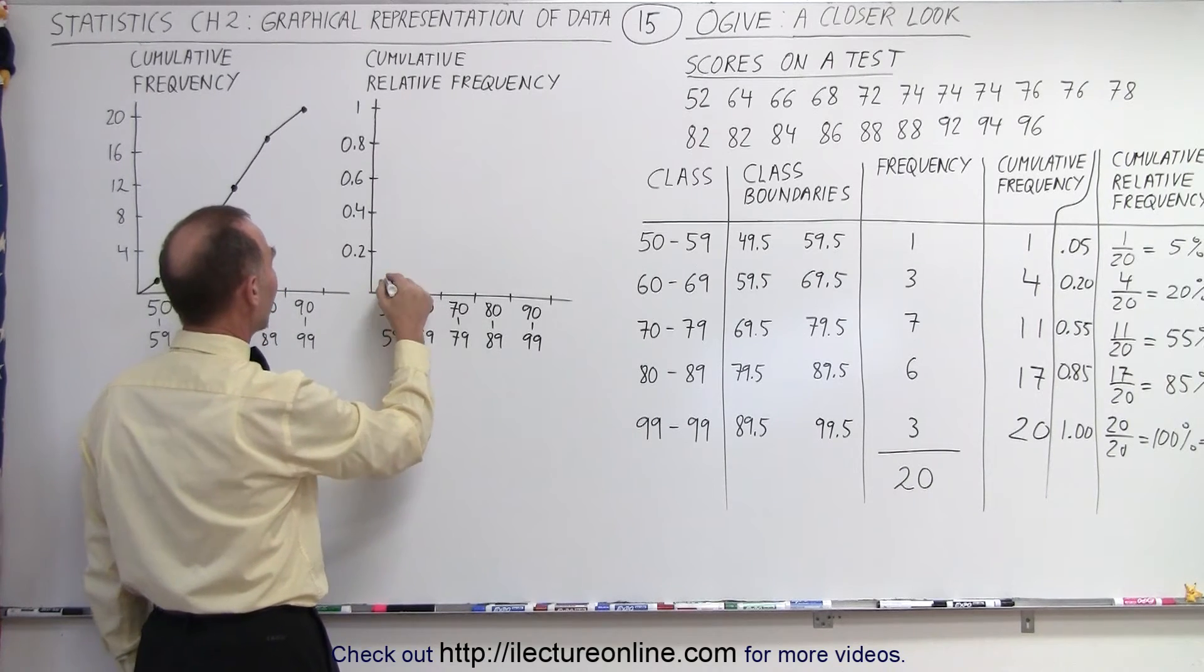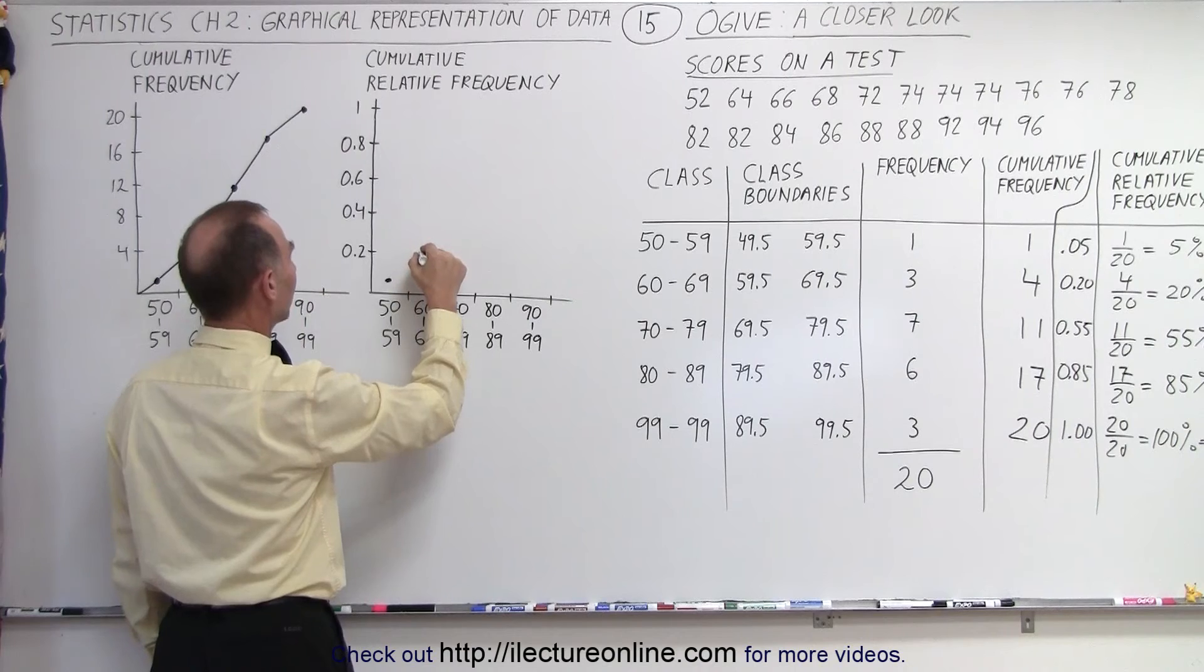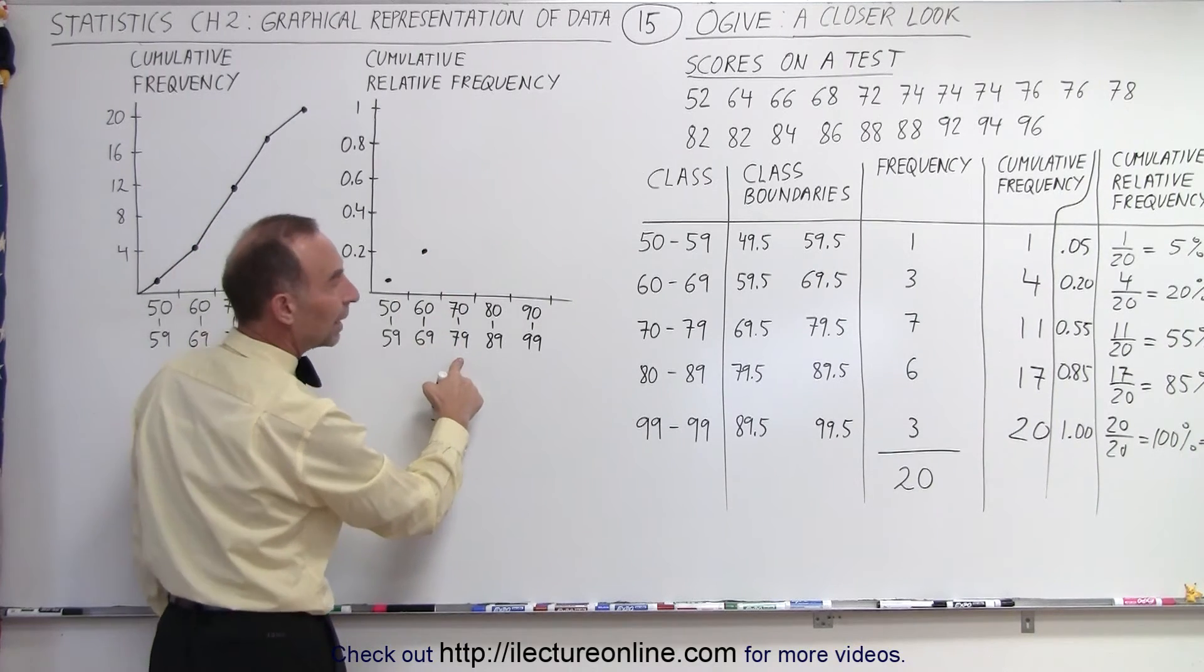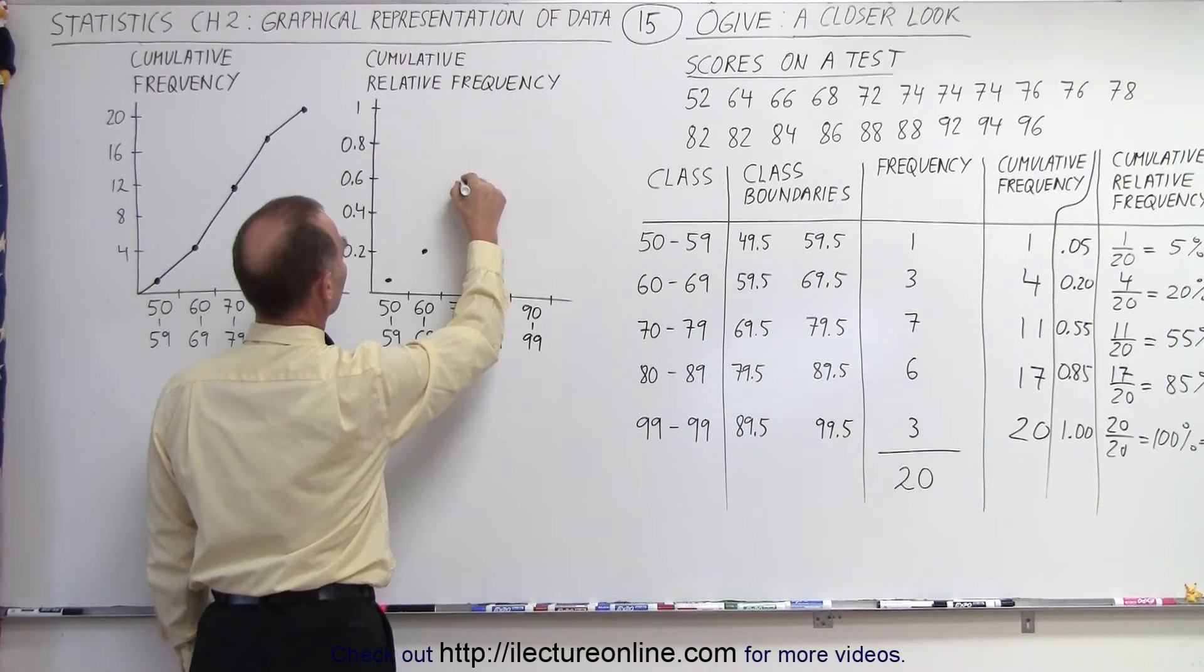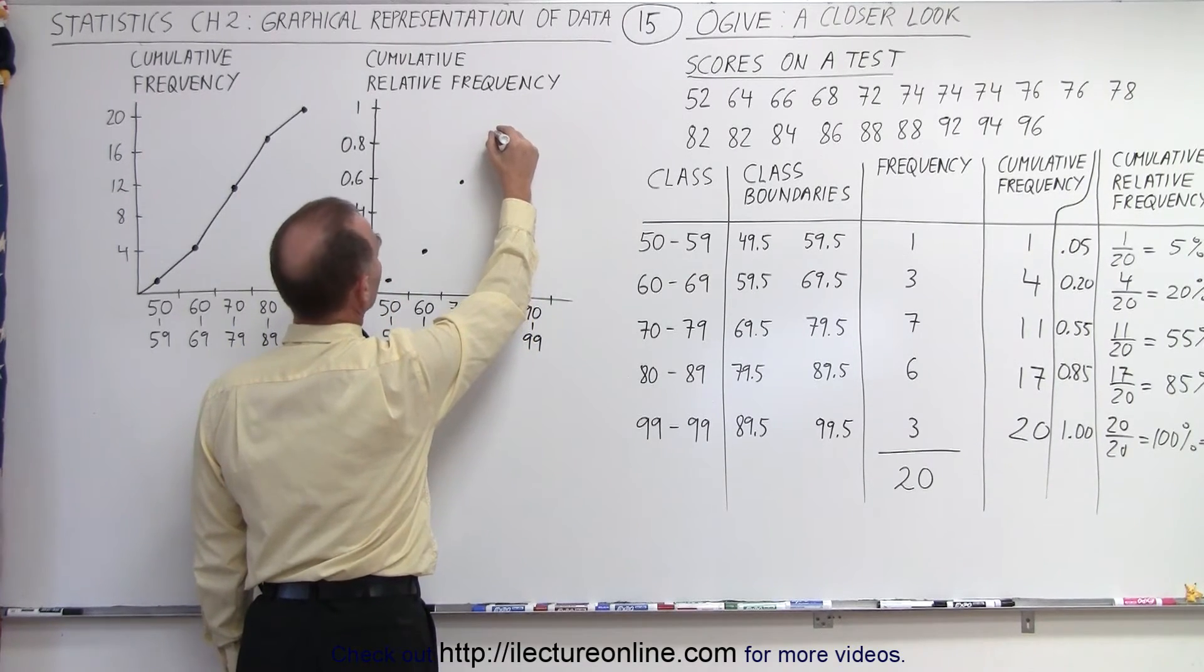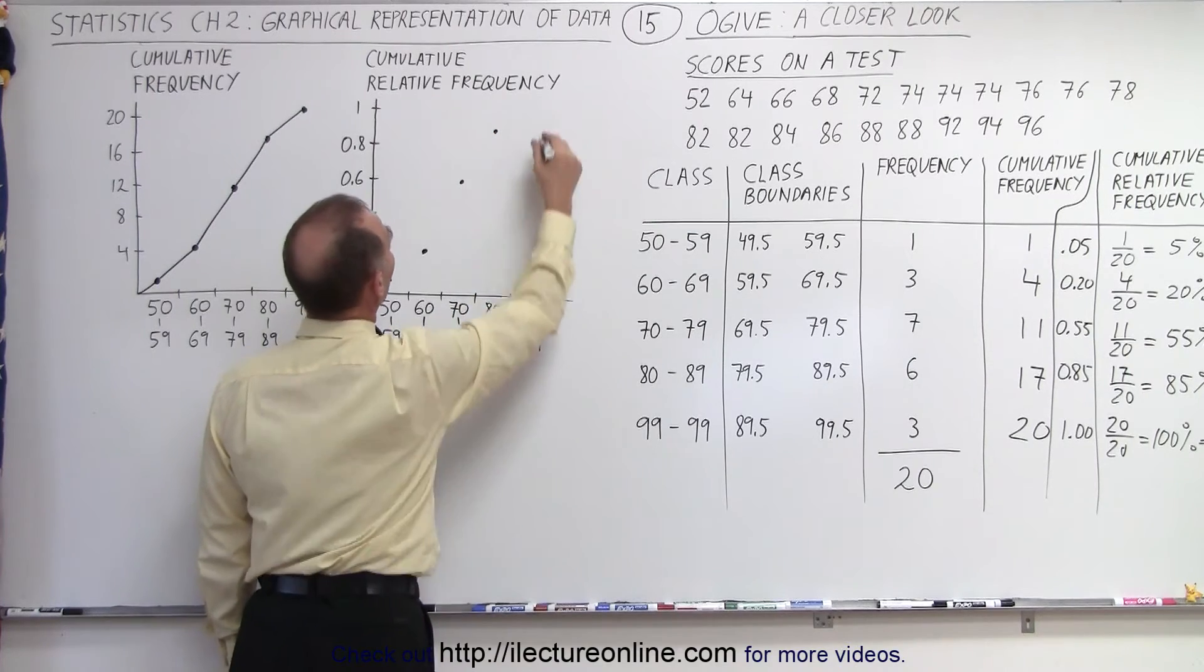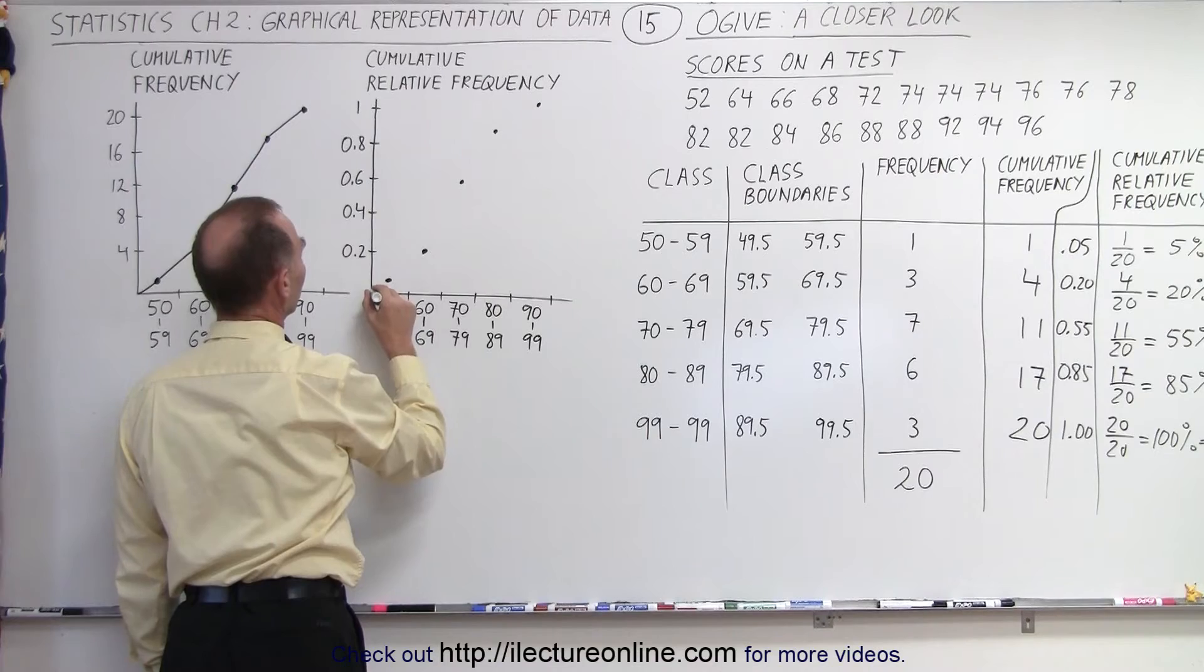And so now when we place the data points, 5% or 0.05 would be about here. Then with the two data points, we're at 0.2. With the three data points together, now we're at 0.55. It's about up here. With the four data points, we're now at 0.85. It would be about here. And finally, with all the data points combined, the cumulative, we're here. So this is what it would look like.